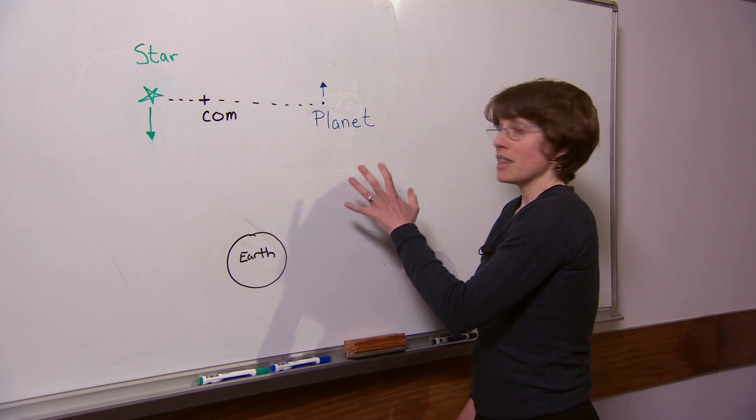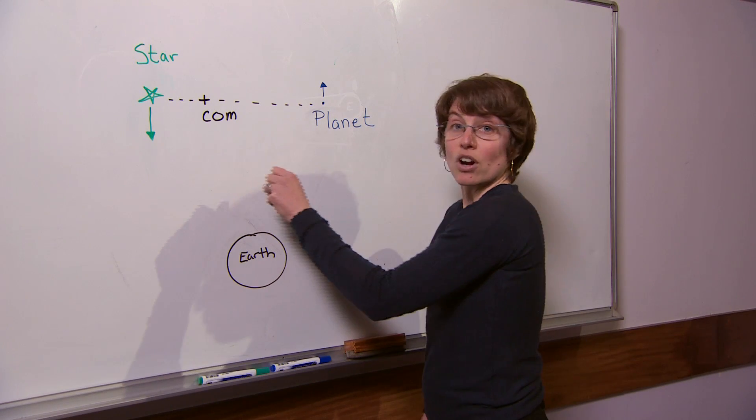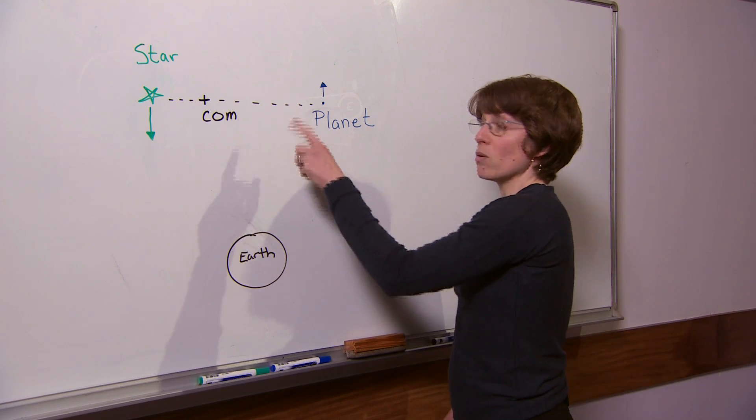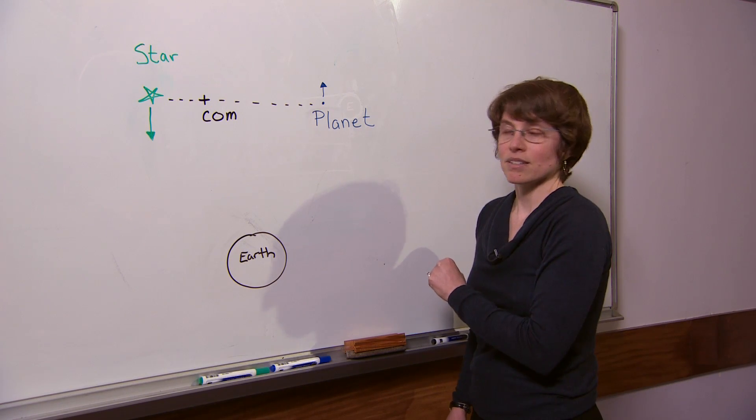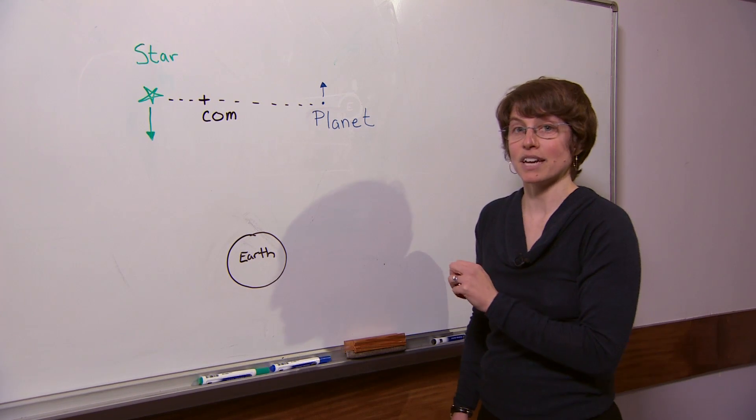Now assume that the planet is very dark and not observable and the star is bright, and we see this star from Earth as orbiting around the center of mass. As this planet moves towards us and away from us, we see this light Doppler shifted.